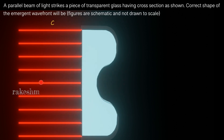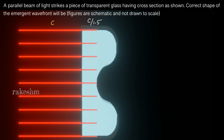The planar wavefront which was here has traveled further with speed c and is now here. As light enters the glass, its speed decreases to c divided by 1.5. You would notice that the speed of light has decreased inside the glass, yet all these points here are still in the same phase, so the wavefront remains planar inside the glass.